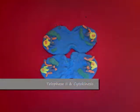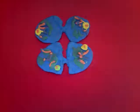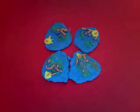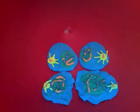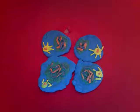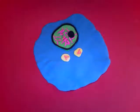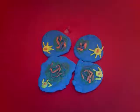Telophase II and cytokinesis occur at the end of anaphase II, as the nucleus reforms. The chromosomes begin condensing, and cytokinesis occurs. Meiotic division of one parent cell produces four daughter cells, or haploid cells, each with a haploid set of unreplicated chromosomes. Each is genetically distinct from the parent.